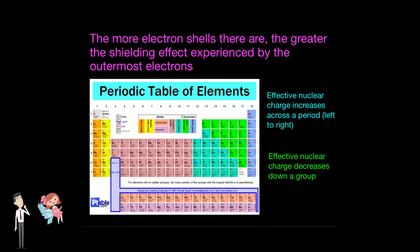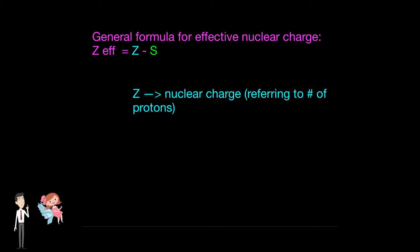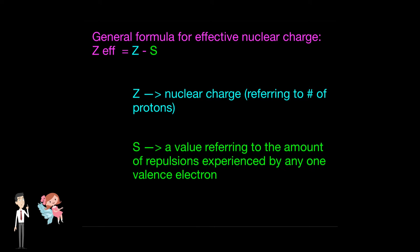Although more protons are being added and nuclear charge increases, the core electrons shield the valence electrons from the effect of the nucleus, because there are more energy levels, hence decreasing the effective nuclear charge when going down a group. There is a general formula we can use to calculate effective nuclear charge: effective nuclear charge equals Z (nuclear charge, referring to the number of protons) minus S, a value referring to the amount of repulsions experienced by any one valence electron.